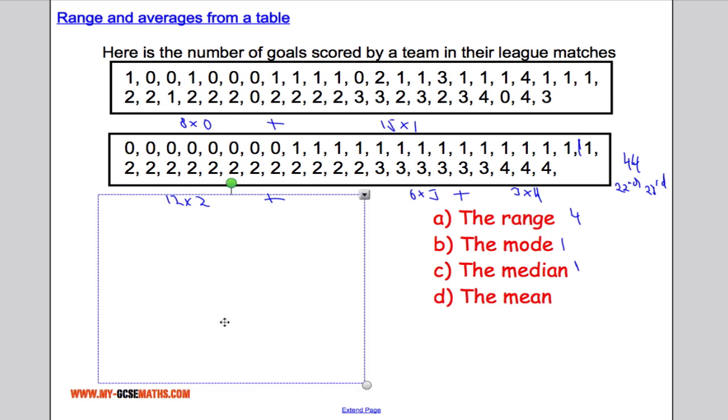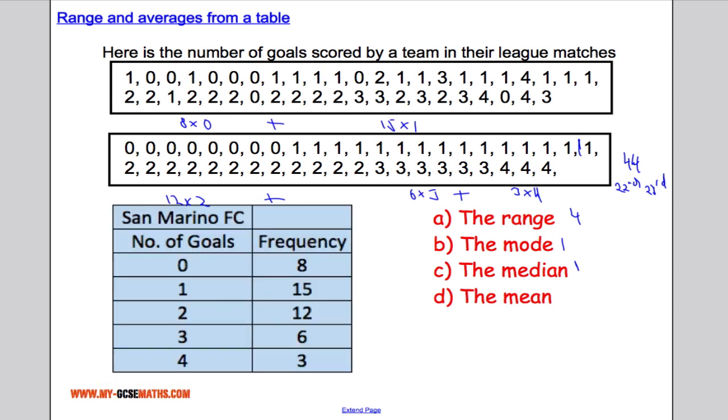But let's have a look at what's done when we're using a table. So here we have it here. The information is now placed into a table, and I want to work out range, mode, median, and mean. So let's just delete this here, make a bit more space.